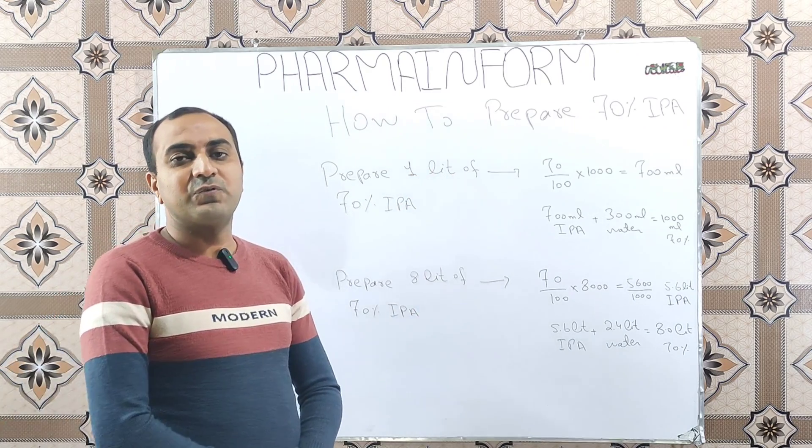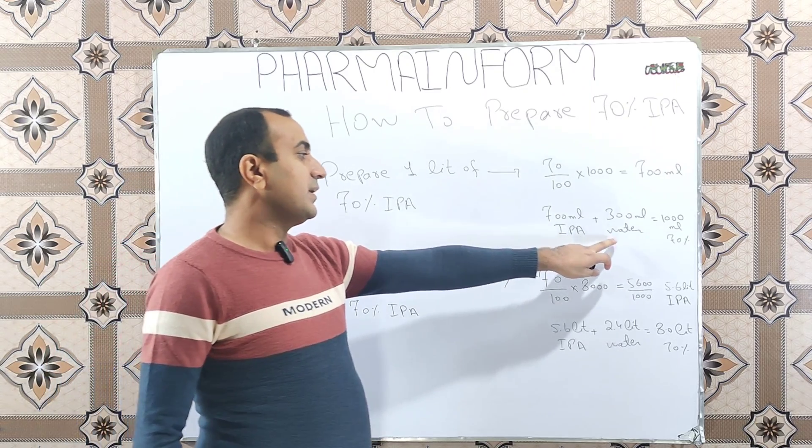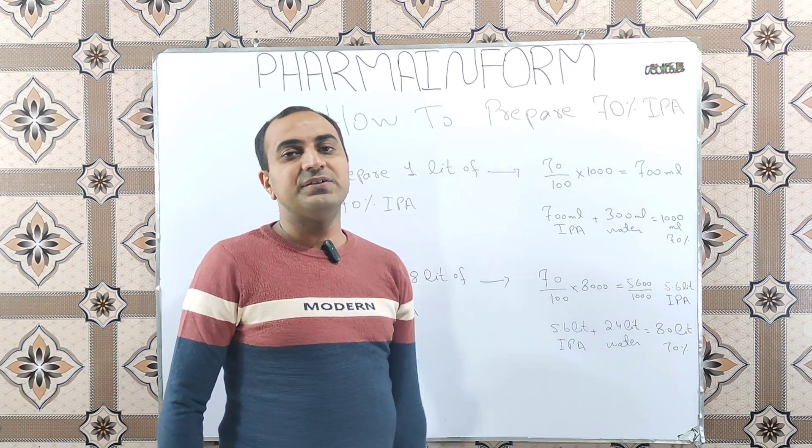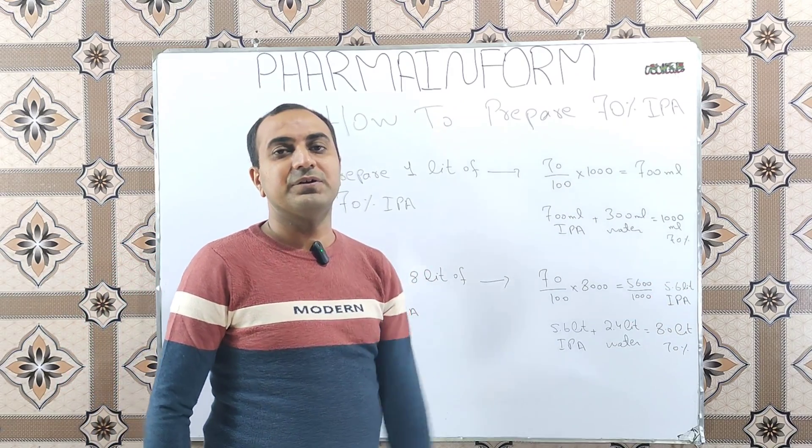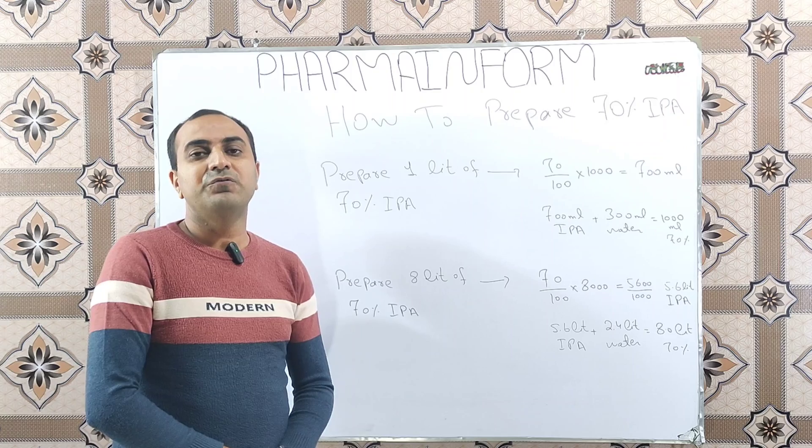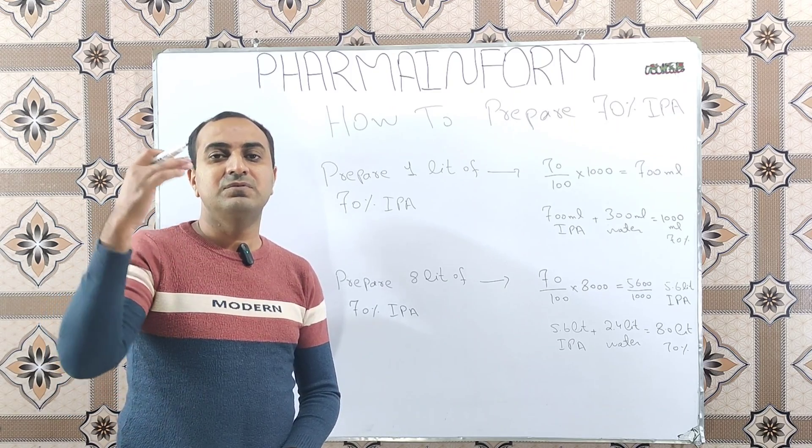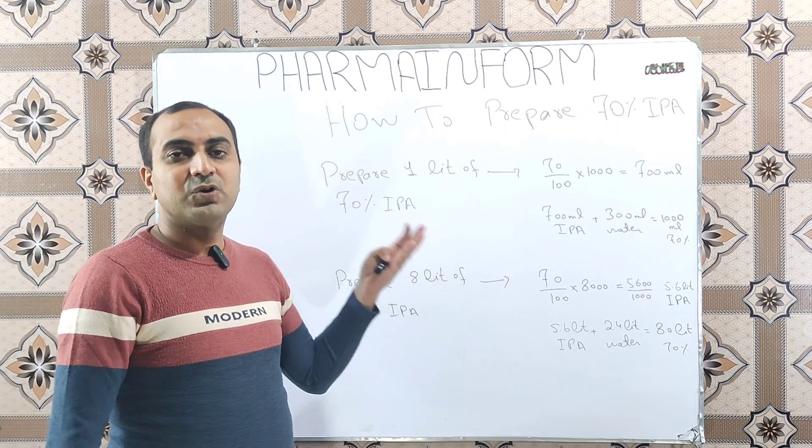First of all, for 1 liter as we discussed earlier, we use 700 ml and 300 ml of water. So, total is 1000 ml or 1 liter which is 70%. But if we want to prepare 5 liter of 70% solution, 15 liter of 70% solution, how we will prepare? So, remember a simple trick.